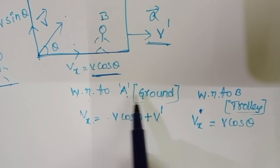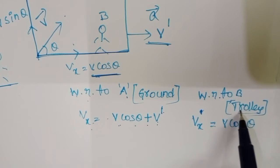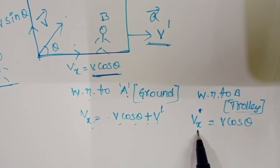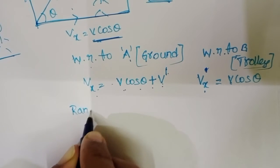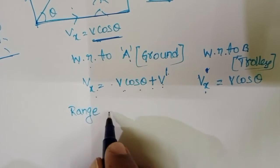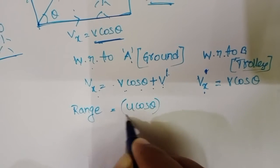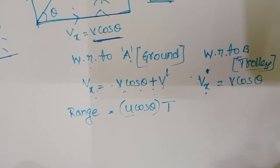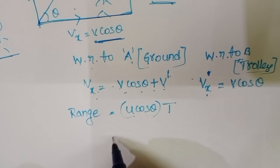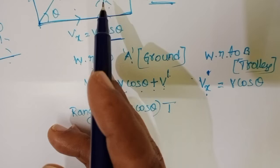Relative to person A — that means the ground — the horizontal component of the velocity is v cos theta plus v dash. But relative to person B — that means the trolley — the horizontal component vx equals v cos theta. Range equals horizontal component of velocity multiplied by time of flight. In these two cases, the horizontal component is different, so range is also different relative to ground and trolley.